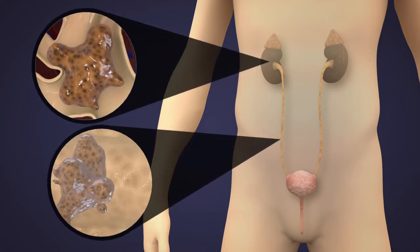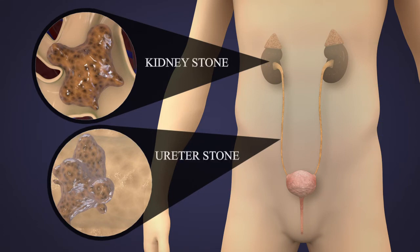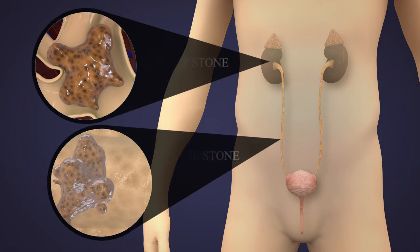Kidney stones are a build-up of substances in the urine. Most ureteral stones are kidney stones that have moved out of the kidney into the ureter.